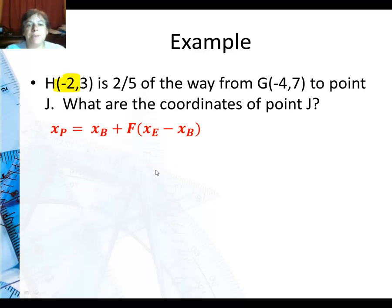I've got negative two. That's my partway point. So that's why it goes on the left. My beginning point is negative four. So it's going to go here and here. Two-fifths is my fraction. So it goes there.